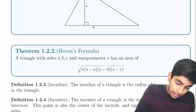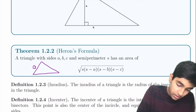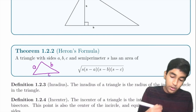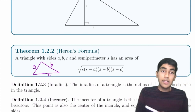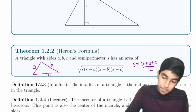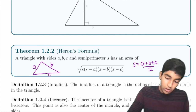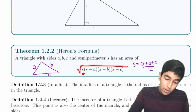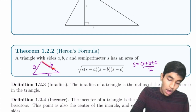For Heron's formula, you find the semi-perimeter s = (a + b + c) / 2. Then the area is the square root of s × (s − a) × (s − b) × (s − c).